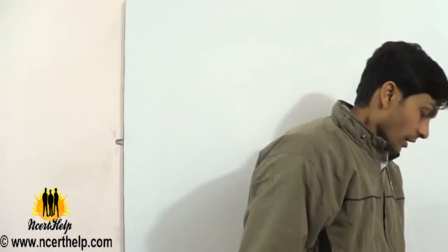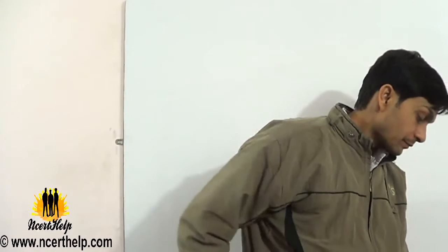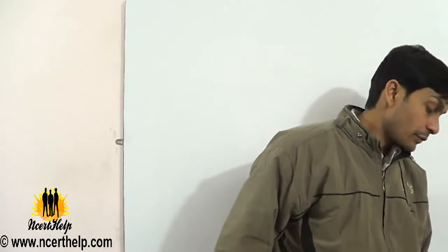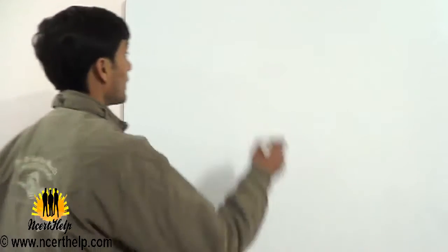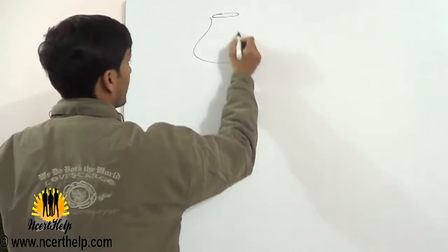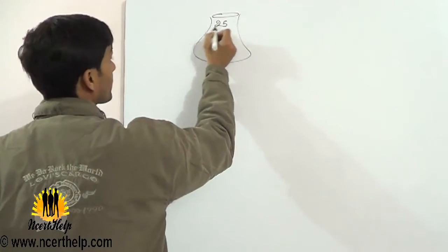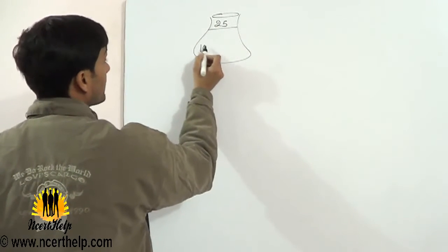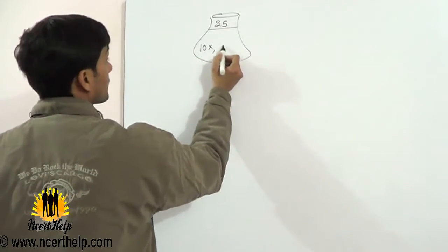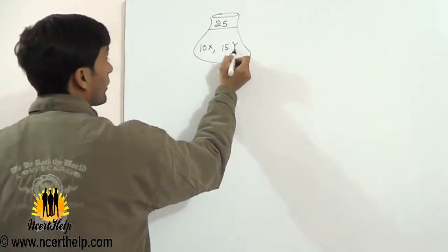Question number 5. An urn contains 25 balls, of which 10 balls bear X mark and the remaining 15 bear Y mark. Total balls are 25: 10 X mark, 15 Y mark.